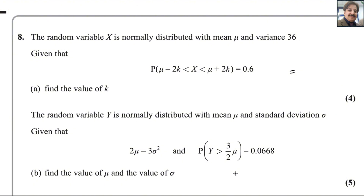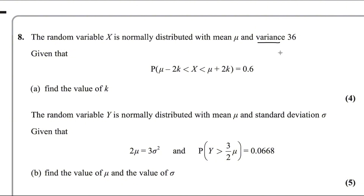The random variable X is normally distributed with mean mu and variance 36. Given that the probability of mu minus 2k is less than X less than mu plus 2k equals 0.6, find the value of k. This question is from normal distribution. Mean is mu, variance is 36, represented by sigma squared. Taking the square root of 36 gives sigma equals 6.